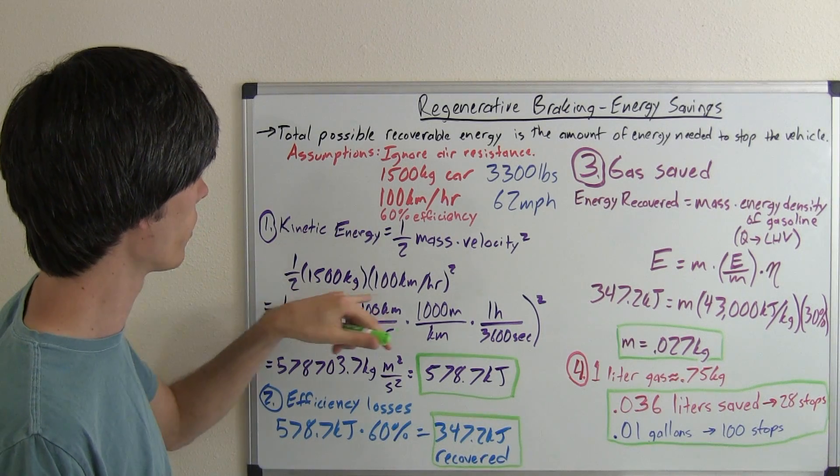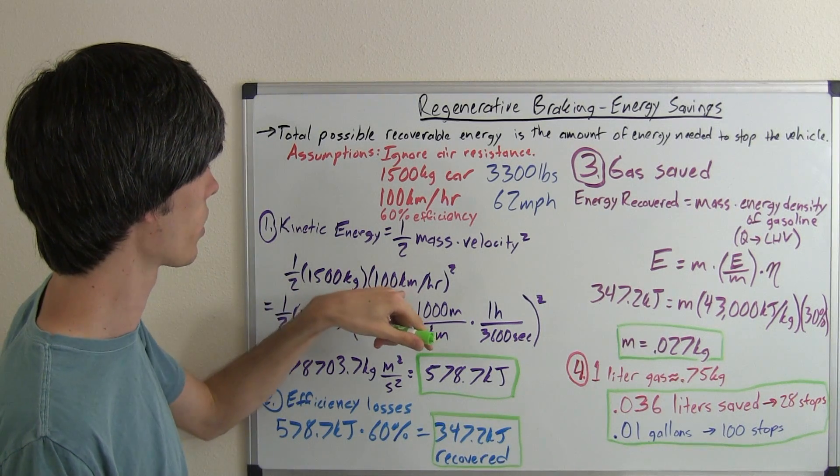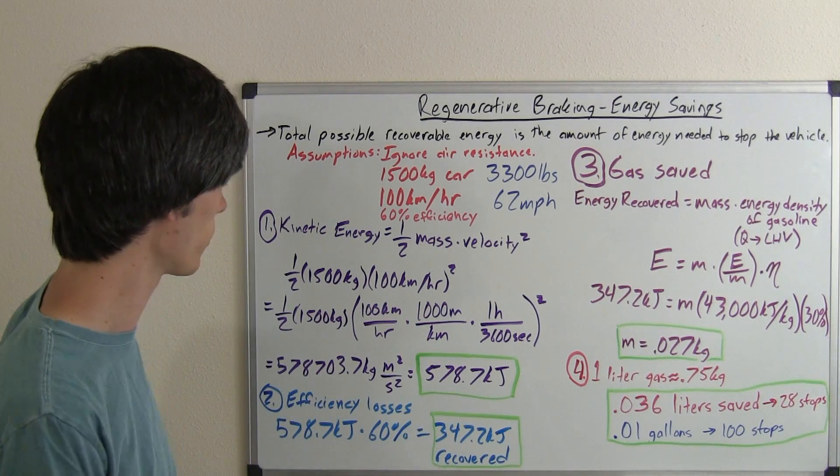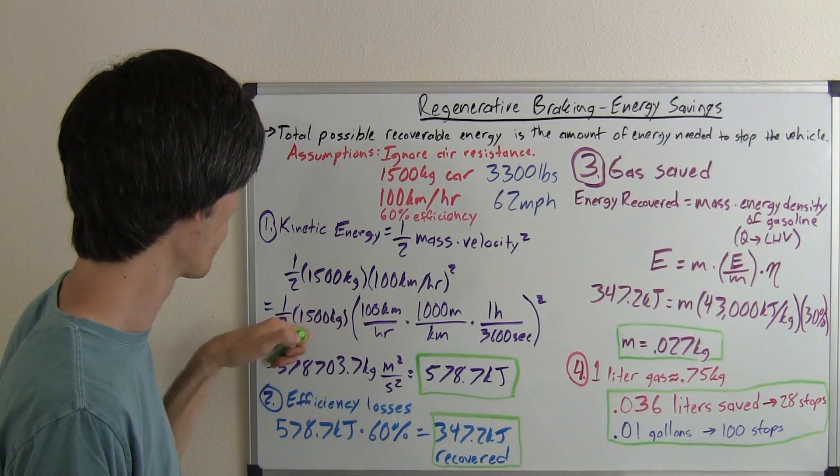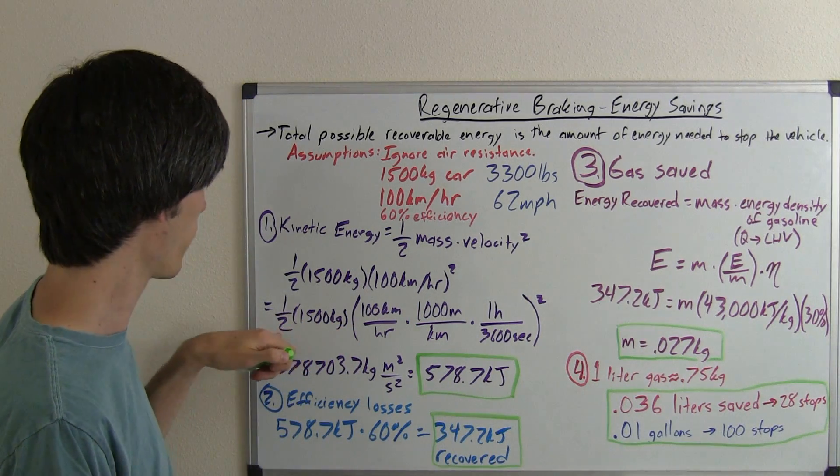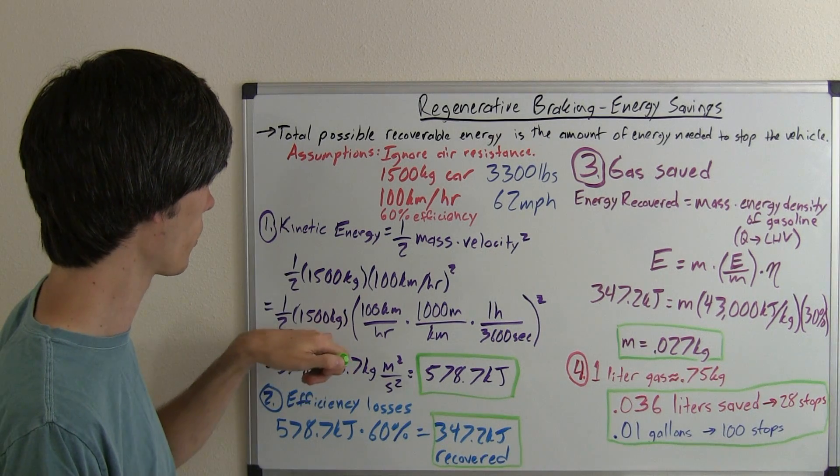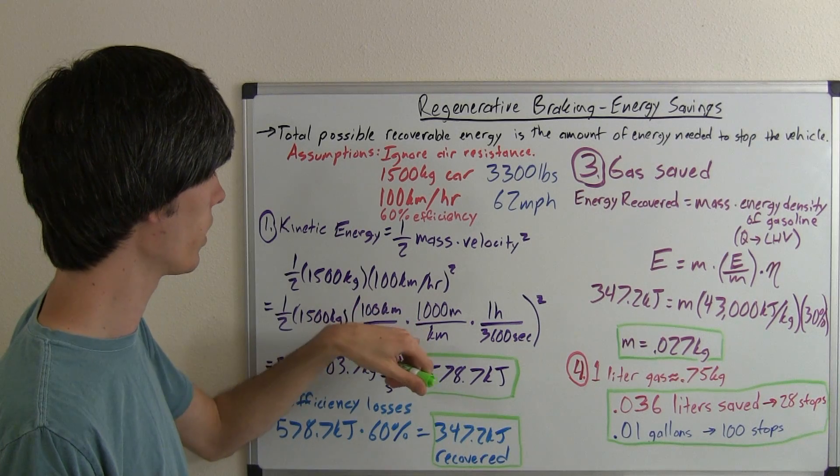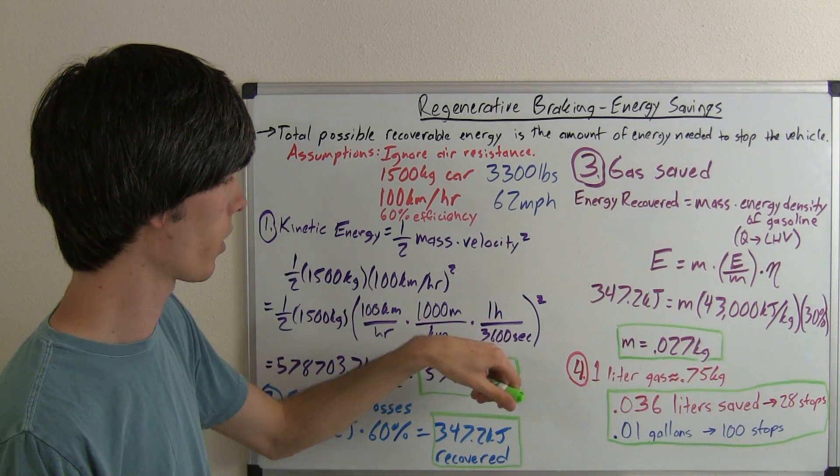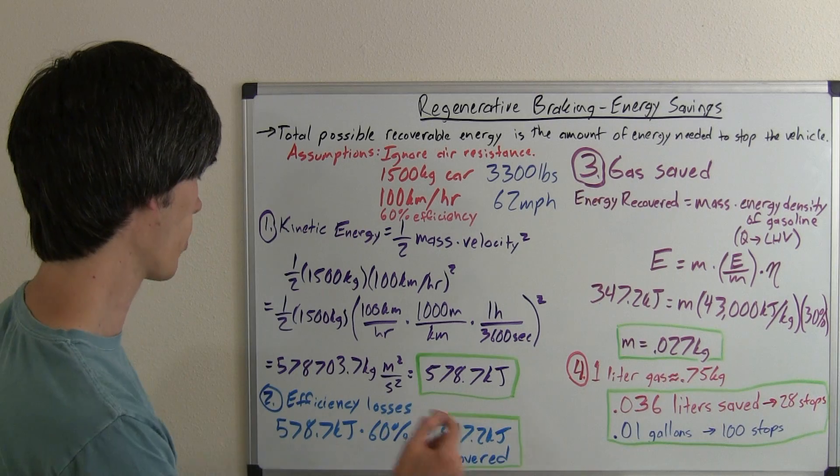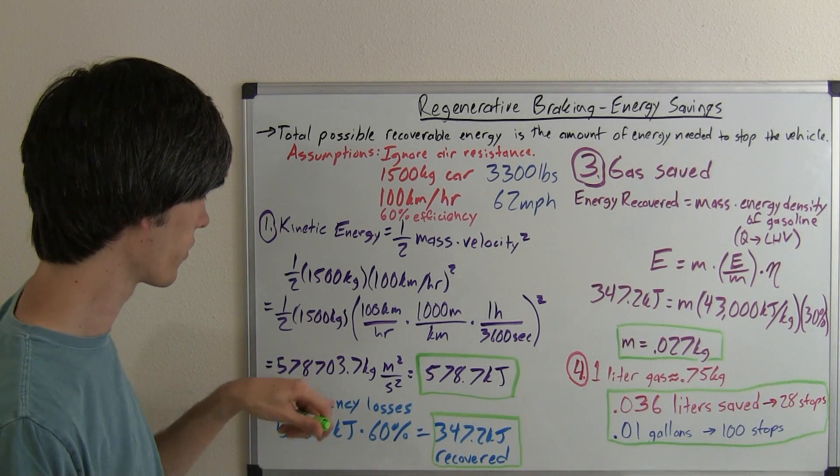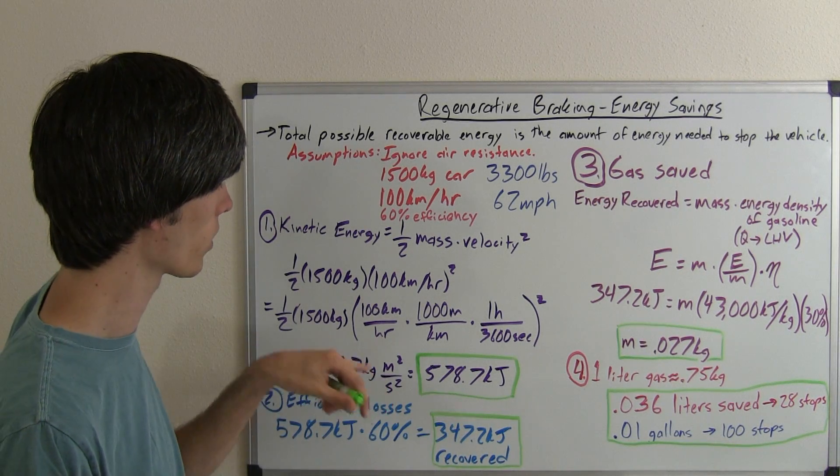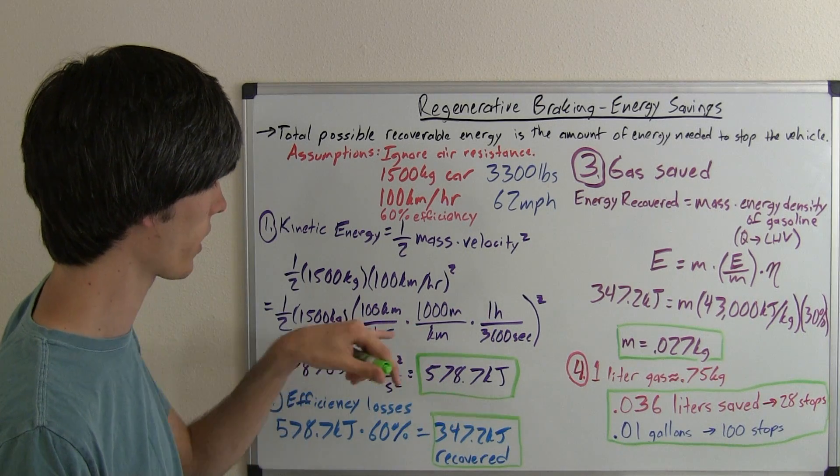One half, 1,500 times 100 kilometers per hour squared. Now, we need this in units of seconds in order to get it into joules. So, we've got here one half times 1,500 kilograms, 100 kilometers per hour. There's 1,000 meters in a kilometer. In one hour, there are 3,600 seconds. Multiply across, square it, and we get 578,703.7 kilogram meters squared per second squared.